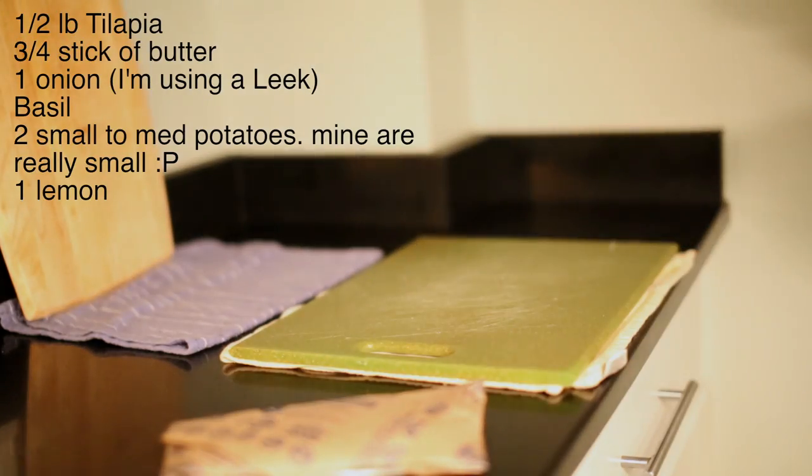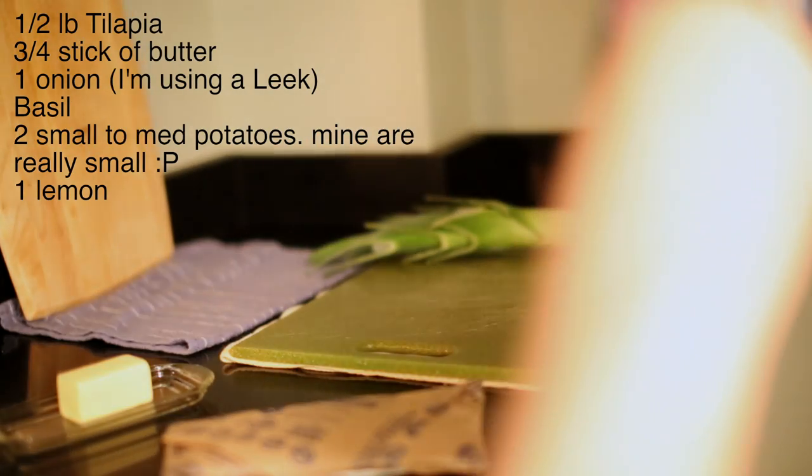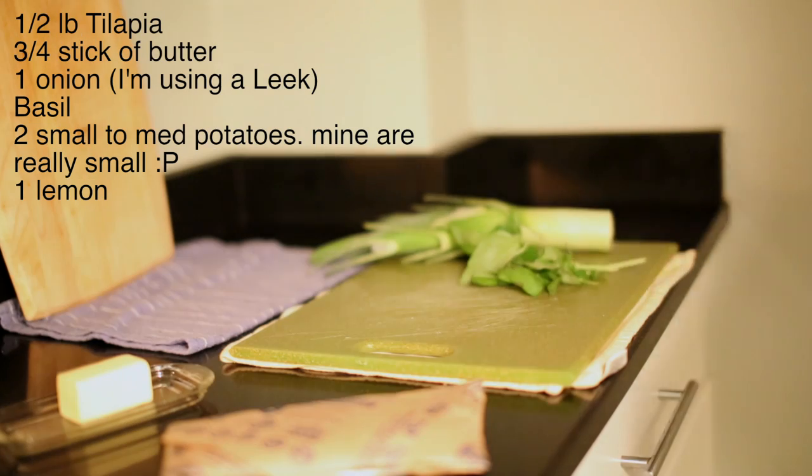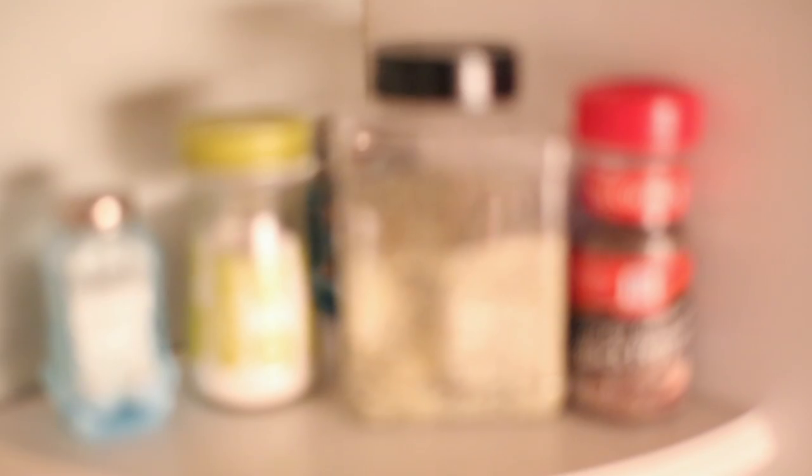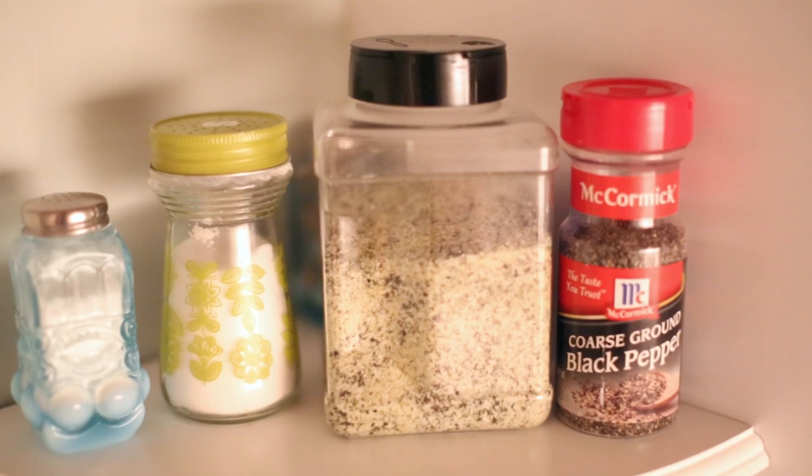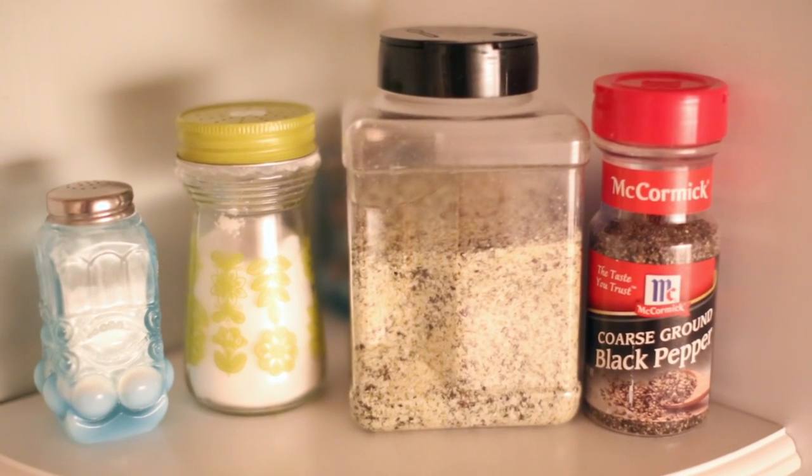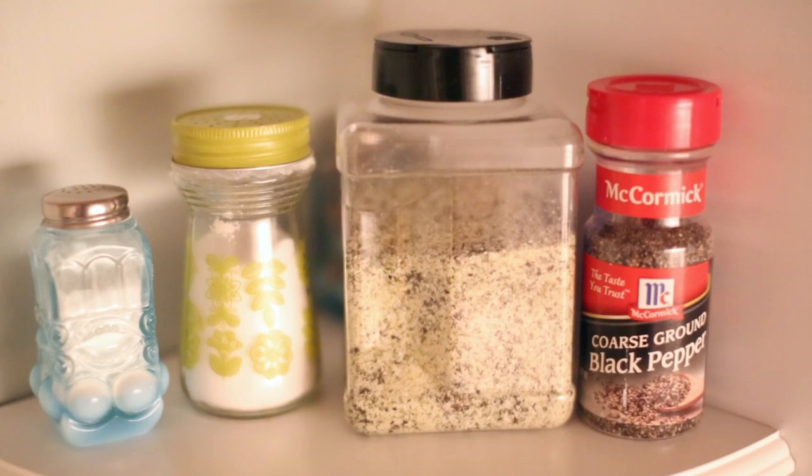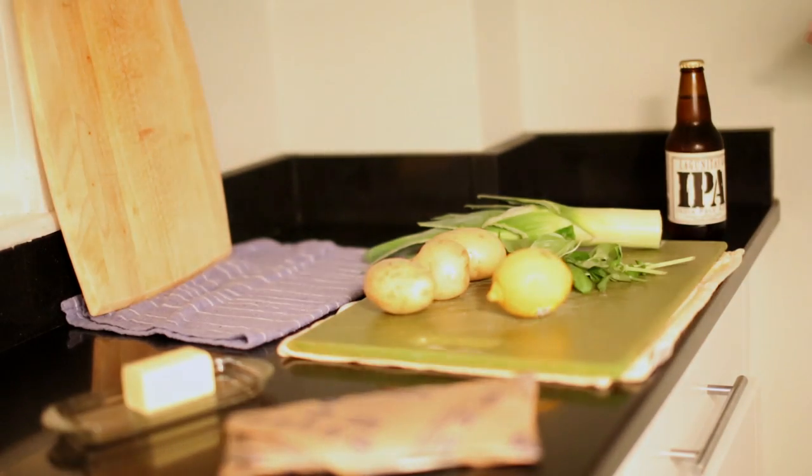Ingredients are about a half a pound of tilapia, about three-fourths of a stick of butter, an onion, some fresh basil, two small to medium yellow potatoes, and one lemon. Then you'll need your pepper, your favorite seasoning salt, some table salt, and some sugar in a shaker. And don't forget your tasty beverage, but that's totally optional.